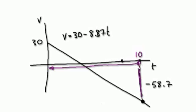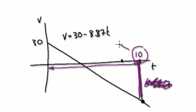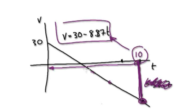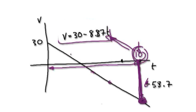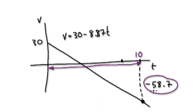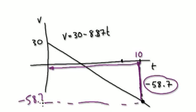You need to know this height at the 10-second mark. Put 10 into the velocity formula here, and that takes you to this point on the line — because this formula always takes you to all the points on the line. If you put 10 into T, it takes you to this point here, which happens to be negative 58.7. So this level here is negative 58.7.